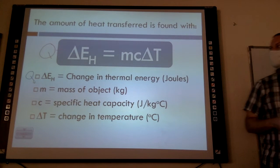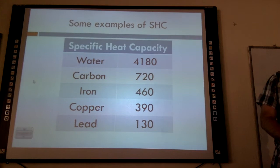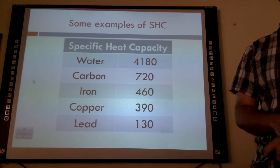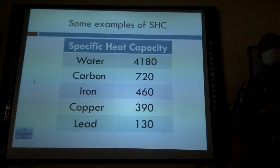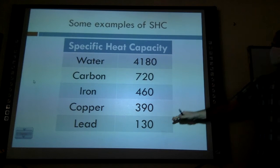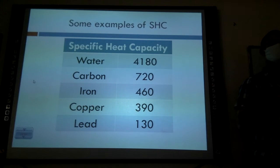The more specific heat capacity an object has, the more energy I need to put into it to change its temperature. Looking at the table: water, carbon, iron, copper, lead — I need to put a lot more energy into water to change its temperature than lead. If I heat up lead it heats up very quickly. Metals get hot really fast — that's why they're used for pots and pans, because you don't have to wait forever.